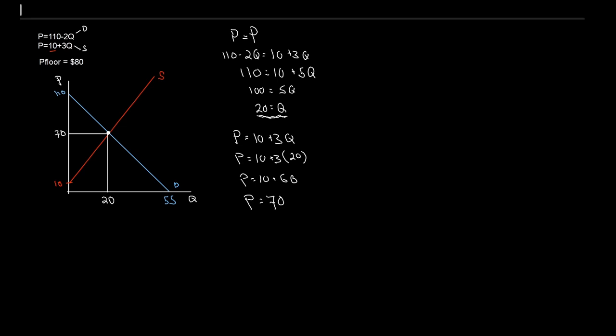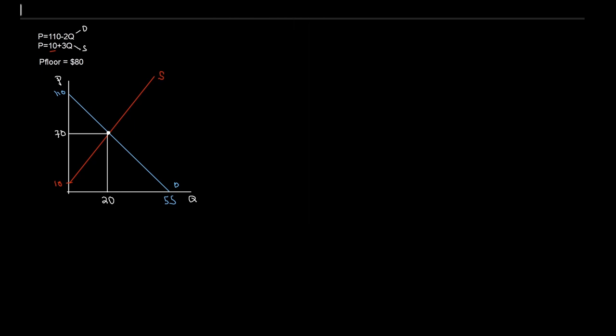We have our initial equilibrium. What we're ultimately looking at is how to figure out quantity exchanged under the price floor, and then conducting a surplus analysis — consumer surplus, producer surplus, and social surplus — to see how these change under the policy. That is, do we have winners? Do we have losers? Let's clean up and take a look at initial consumer, producer, and social surplus.